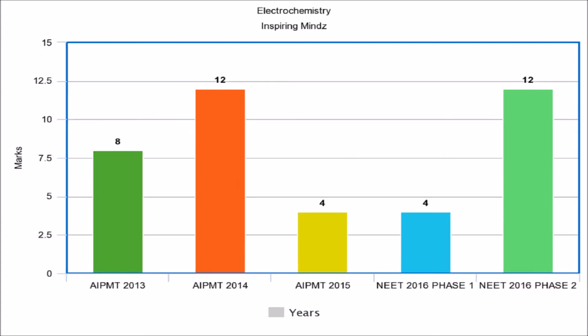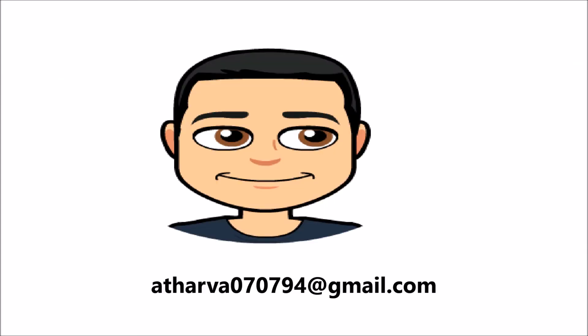The last and final most important topic is electrochemistry. In AIPMD 2014 and NEET 2016 Phase 2, the weightage was 12 marks. In AIPMD 2015 and NEET 2016 Phase 1, the weightage was 4 marks. In AIPMD 2013, the weightage was 8 marks.